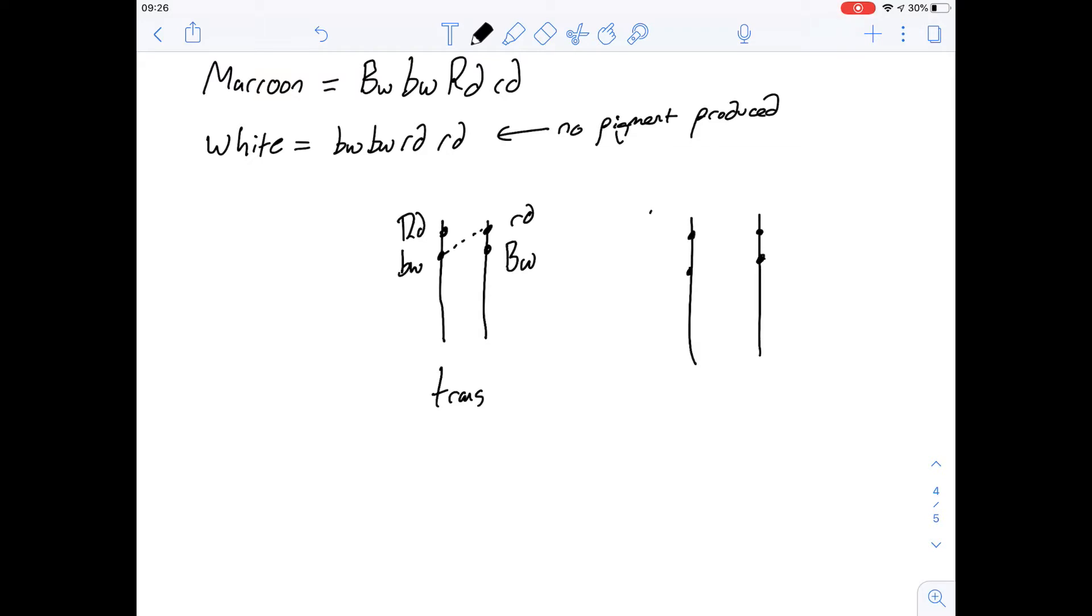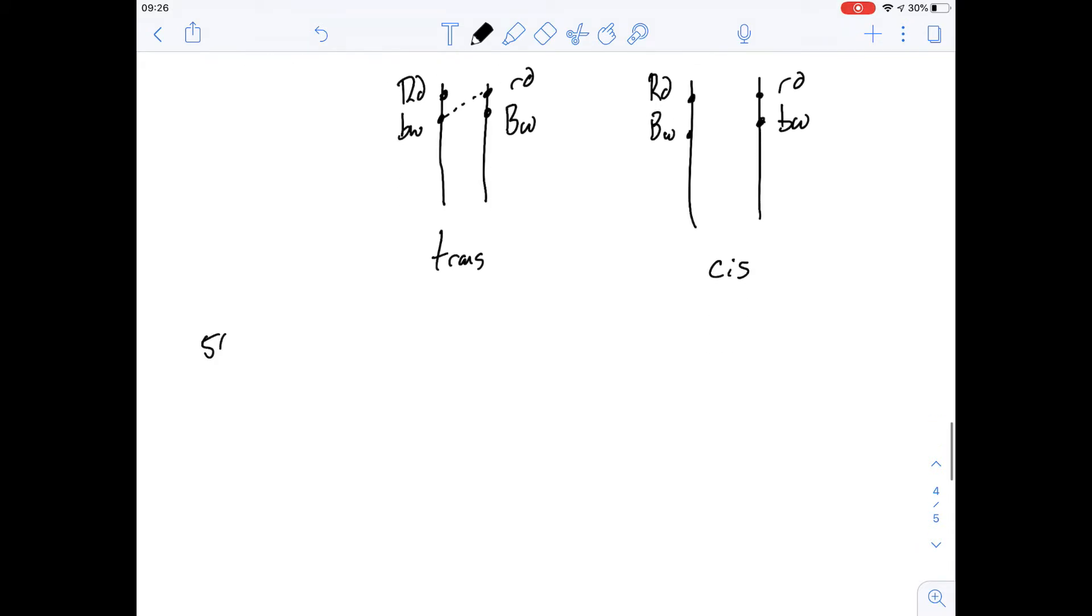So again we've got our two loci for our two different genes here on either chromosome. And it means we're going to have one chromosome that has the dominant and one that has the recessive. We'll come back to why that's important in a minute.